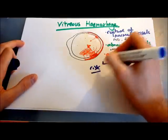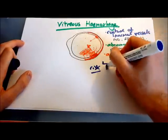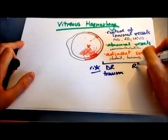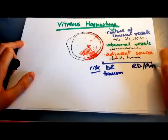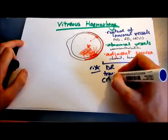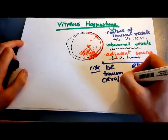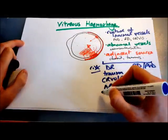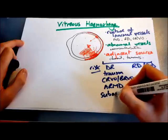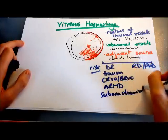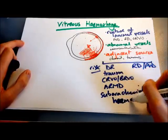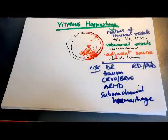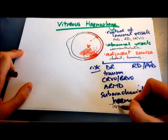The risk factors for vitreous haemorrhage: obviously diabetic retinopathy, any trauma, retinal tears or detachments, or posterior vitreous detachment. Other neovascularisation — so central retinal vein occlusion or branch retinal vein occlusion (more distal). Age-related macular degeneration, and subarachnoid haemorrhage can also cause vitreous haemorrhage. When they both occur together, that's known as Terson's syndrome.